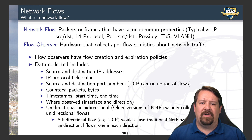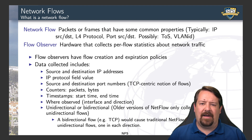Depending on what version of the NetFlow protocol we're talking about, flows may only be unidirectional, or bidirectional flows may also be supported. With the earlier versions that only supported unidirectional flows, a conversation like a TCP connection that generates data packets in one direction and acknowledgements in the other would cause the observer to track two flows, one in each direction.